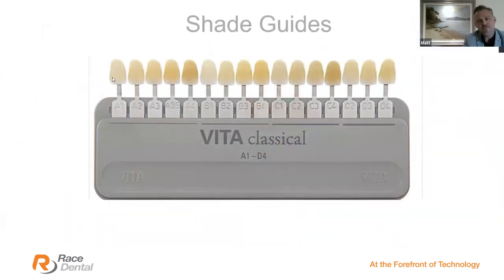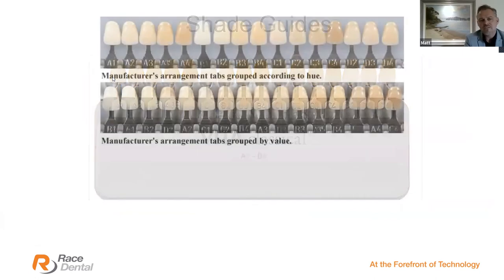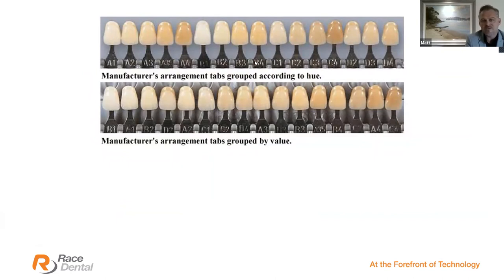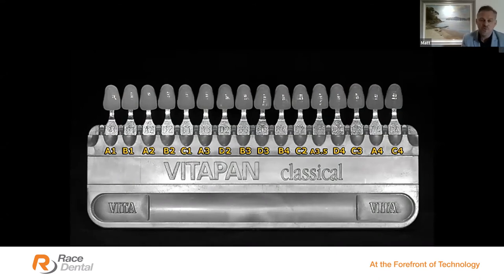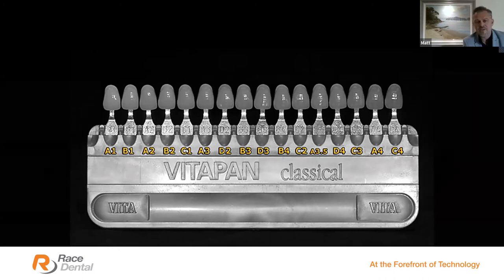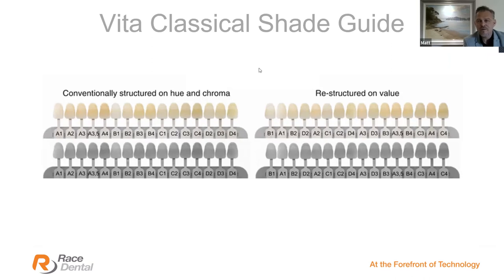Here's the A1–D4 Vita Classical shade guide which I recommend, but what I like to do is rearrange the tabs into a value-based order — from the brightest value down to the darkest. This helps you focus on value as opposed to hue or chroma. It's a similar concept to what the Vita Master shade guide took on. I've reproduced that in black and white here so you can see how the value changes from bright to dark — a really powerful way to turn the Vita Classical shade guide into a more useful communication tool.